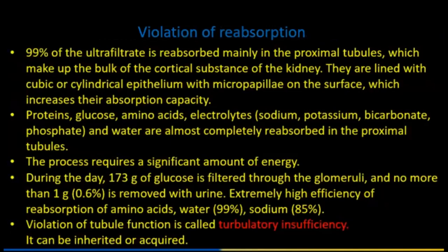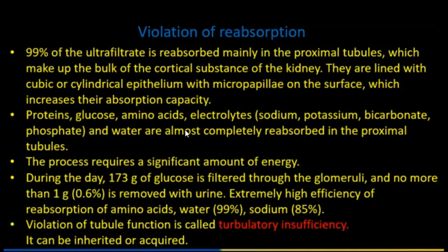Violation of reabsorption: 99% of ultrafiltrate is reabsorbed mainly in the proximal tubules, which make up the bulk of the cortical substance of the kidney. In the proximal tubules, proteins, glucose, amino acids, electrolytes, and water are almost completely reabsorbed. This process requires a significant amount of energy. During the day, 173 grams of glucose is filtrated through the glomeruli, and no more than one gram (0.6%) is removed with urine.